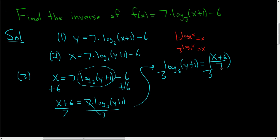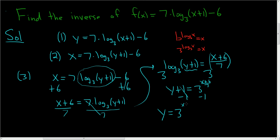This whole thing is the exponent. So on the left-hand side we're just going to get y plus 1, and on the right-hand side we get 3 to the quantity x plus 6 divided by 7. Subtract 1 from both sides and we get y equals 3 to the x plus 6 over 7, minus 1.